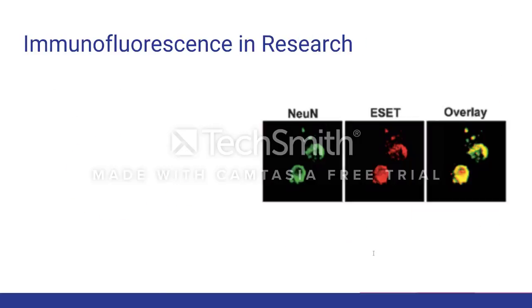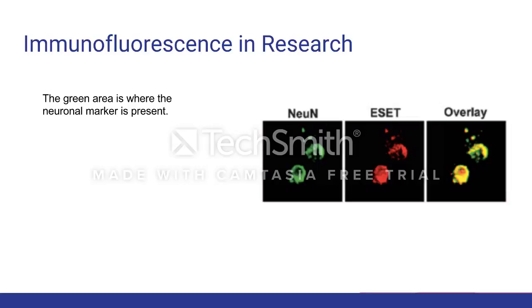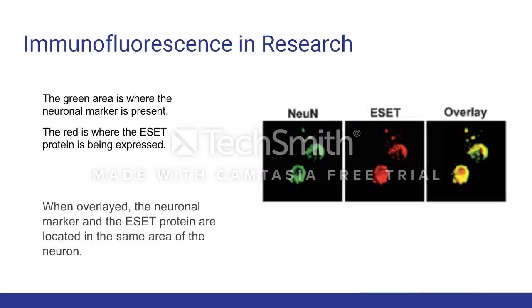Now that you've heard about the basic research purposes, what does this actually look like? The figure to the right shows a picture of a single sample of a neuron being illuminated with two different types of fluorochromes. The green area is where the neuronal marker is present, and the red is where the ESET protein is being expressed. So when these two pictures are overlapped, you can see that the neuronal marker and the ESET protein are located in the cell body of the neuron.